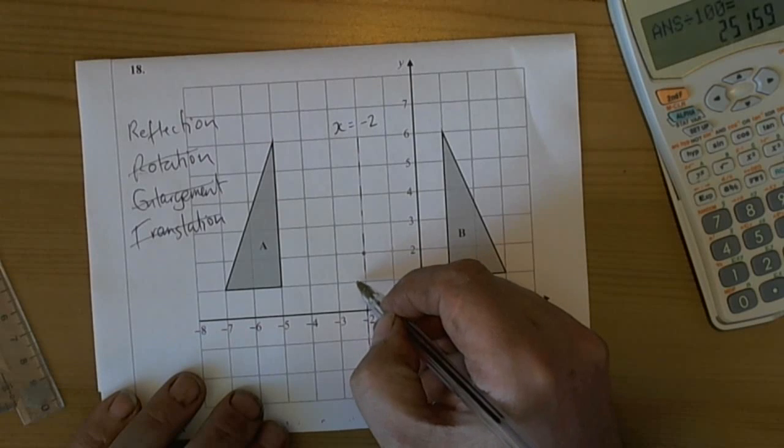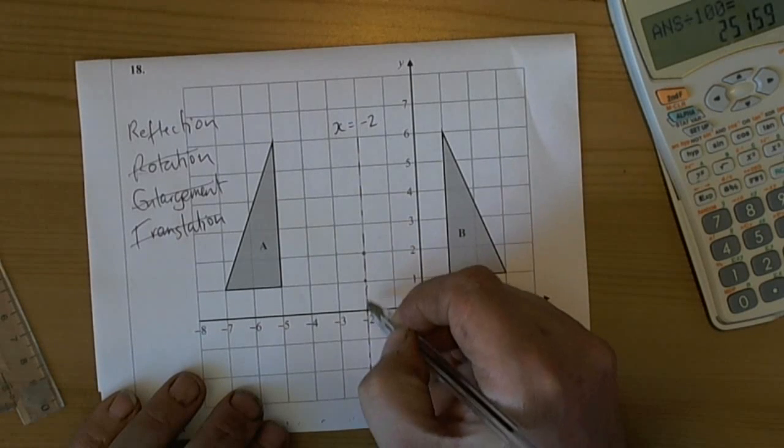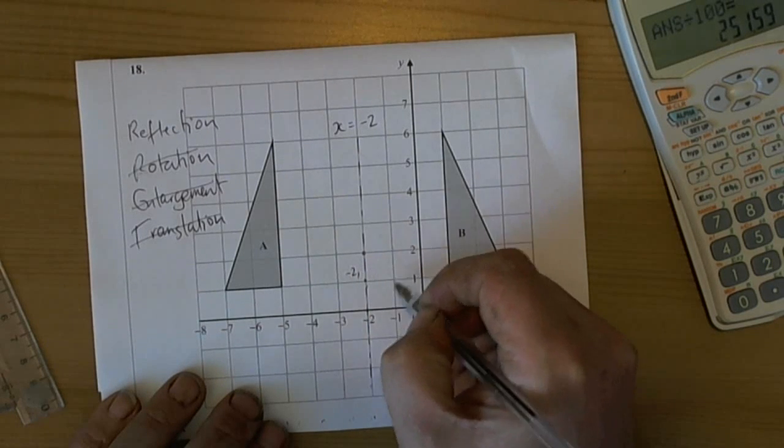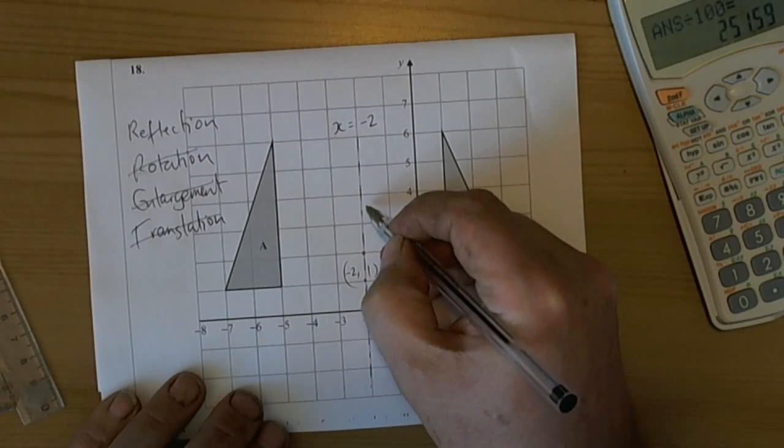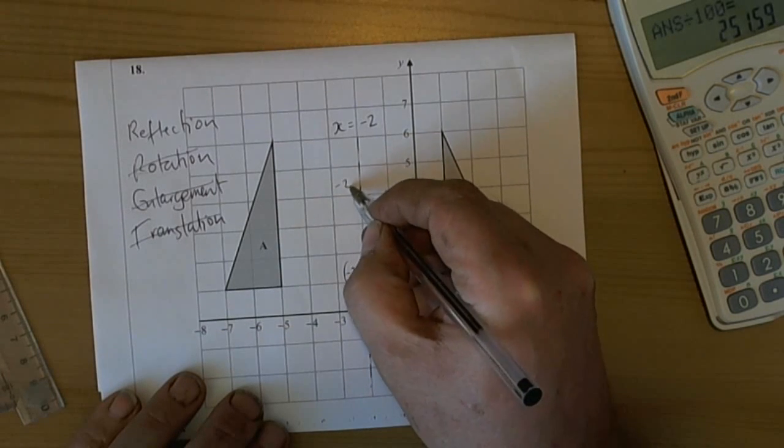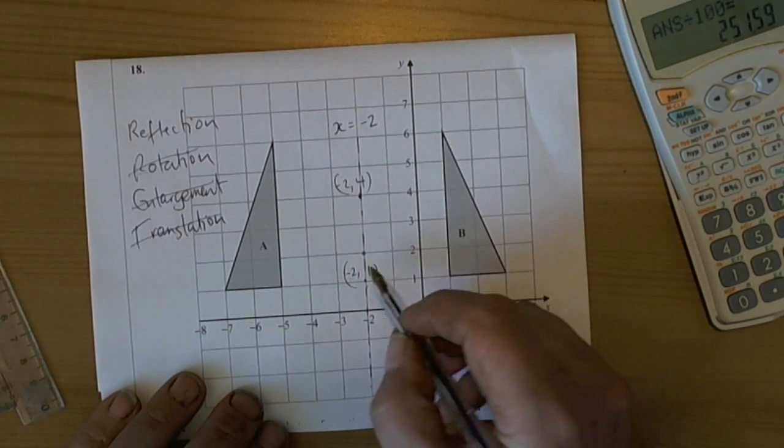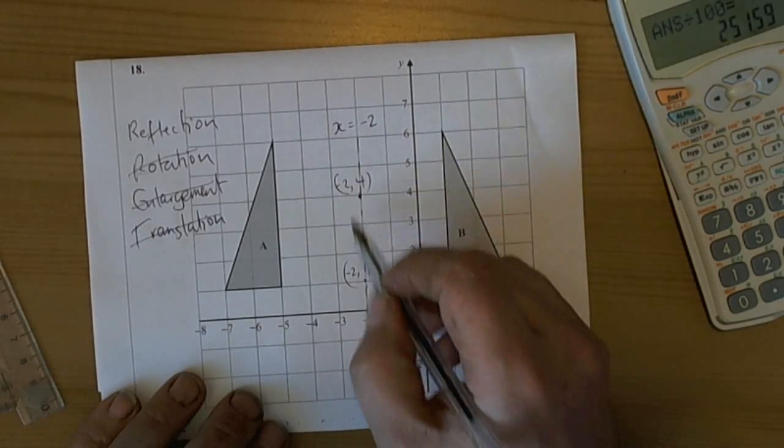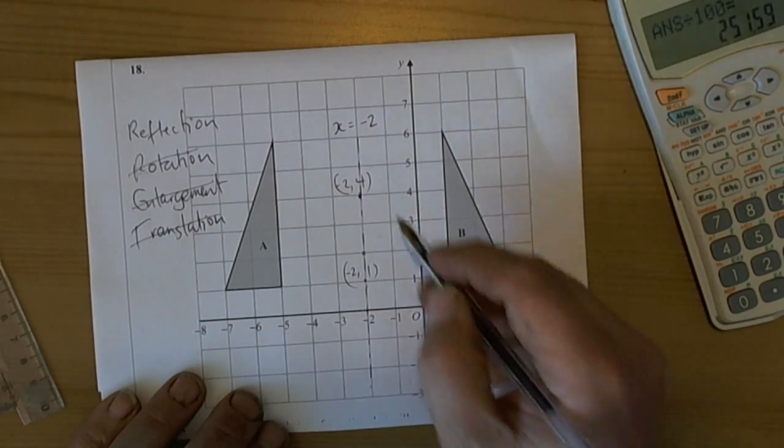So again, the check, of course, if that's right, is all these coordinates will start at minus 2 something. So minus 2, 1, minus 2, 4. So all the x coordinates on this line stay the same, hence the reason it's called x equals 2.